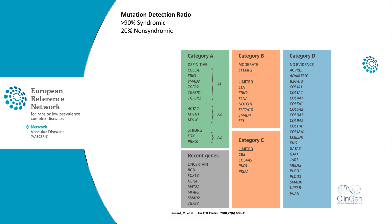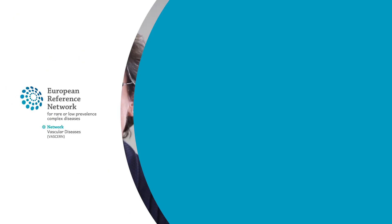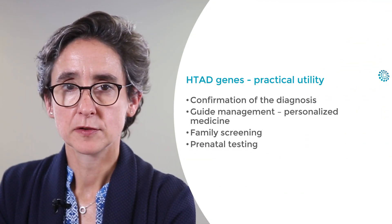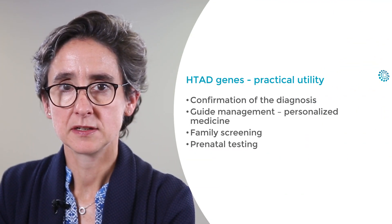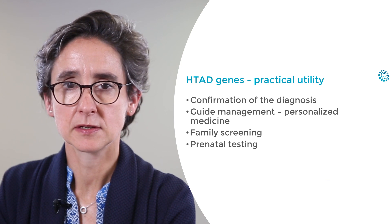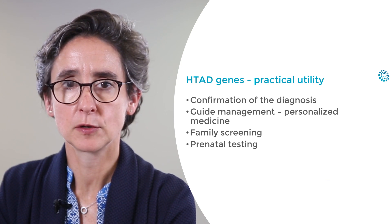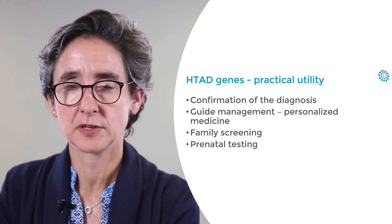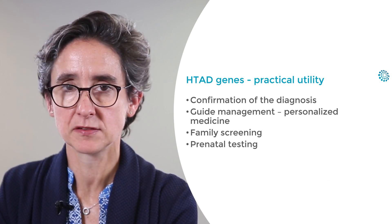Mutation detection rate is high for syndromic forms, often over 90%, and is much lower for the non-syndromic forms, often below 20%. Identification of an underlying gene in heritable thoracic aortic disease is important because it will confirm the clinical diagnosis in many patients and families.